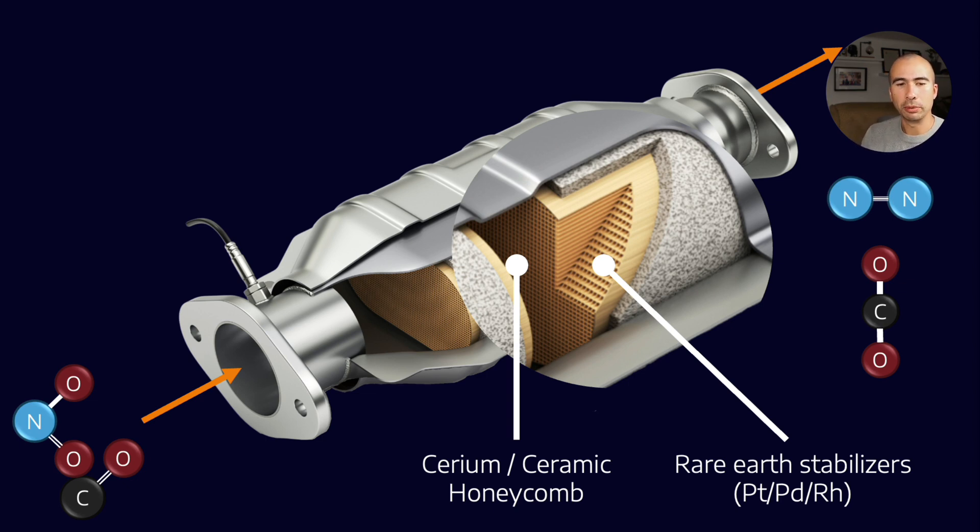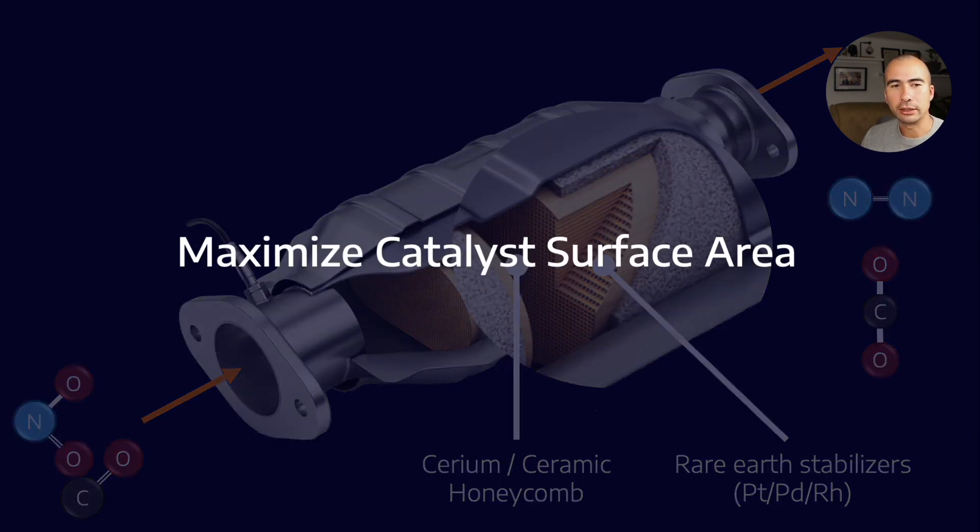Now, what is the purpose in this ceramic honeycomb? Well, the purpose behind it is really to maximize the catalyst surface area. Within this relatively small package, you want to have as much platinum, palladium, and rhodium exposed to the exhaust gases as possible. So, that's why they come up with this honeycomb structure.